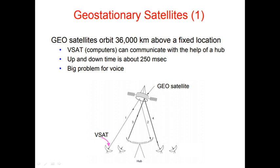First we will learn about geostationary satellites. Geostationary satellites orbit from 36,000 kilometers above a fixed location. VSAT computers can communicate with the help of hubs placed in between, enabling communication through those hubs. The up and down time is about 250 milliseconds — within this time you can upload and download data through the satellite. However, there is a problem with voice over satellite.